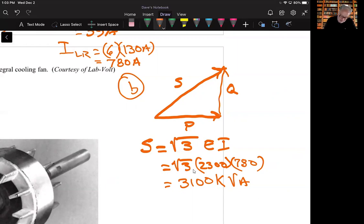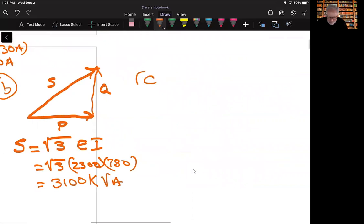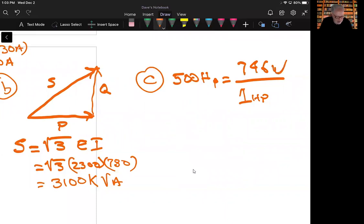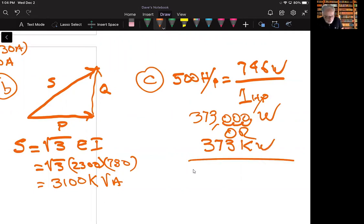And then the last thing it says is state the nominal rating of this motor expressed in kilowatts. Easy peasy, right? This is a conversion of 500 horsepower to watts. And I'm just going to say one horsepower is equal to 746 watts. I'll take out my calculator. And then I would find out that these cancel, of course. And let's see what we got here. We got 500 times 746, and I get 373,000 watts, or 373 kilowatts.